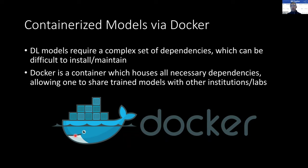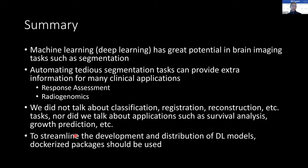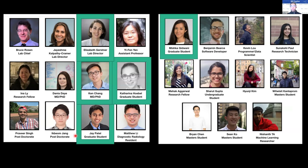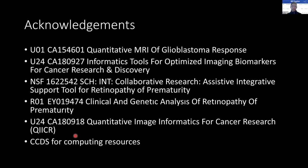These deep learning models require a complex set of dependencies, which can be difficult to install and maintain. If you intend to share your models with other institutions or collaborators, it's recommended that you use a container system such as Docker or Singularity. These containers will house all the necessary dependencies, so if you want to give your trained model to a different institution, they don't have to do any legwork setting up the system you designed. Machine learning has great potential to improve upon standard computer vision tasks such as segmentation and classification, and the automation of these tasks can provide extra information for many clinical applications such as response assessment and radiogenomics.